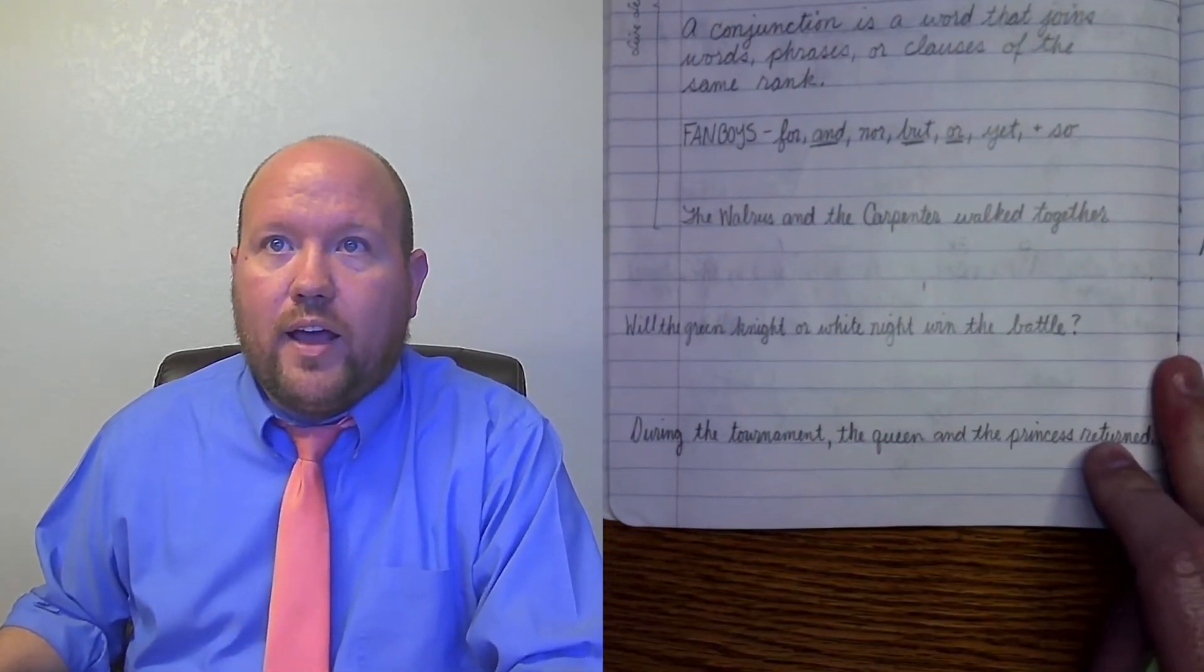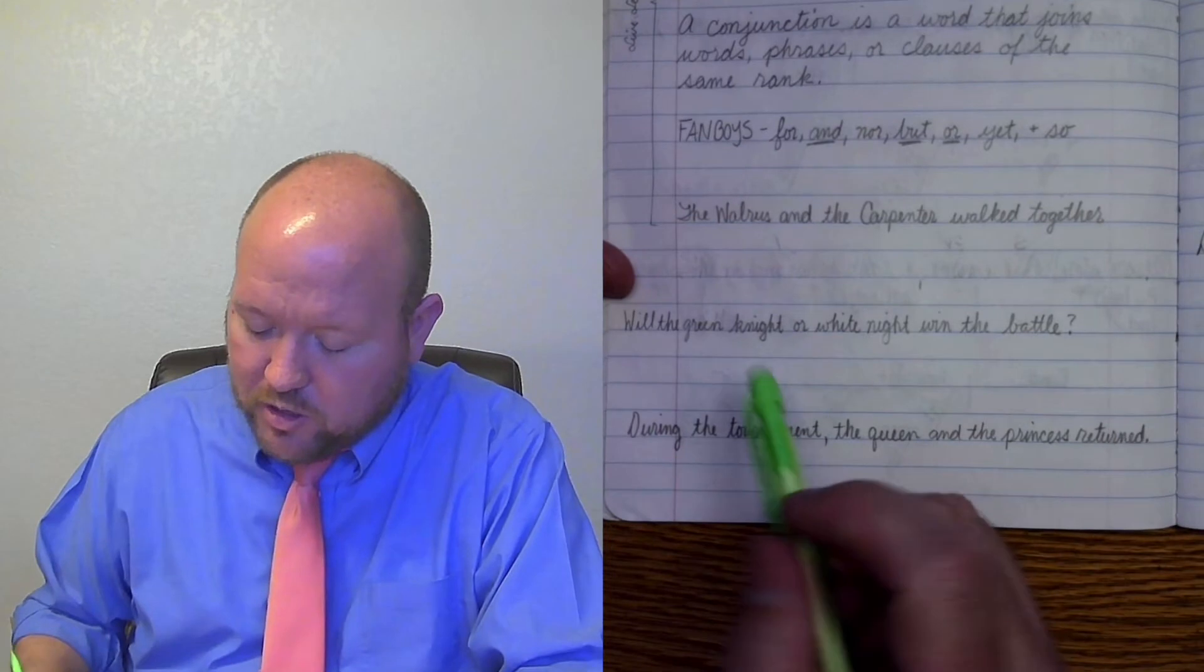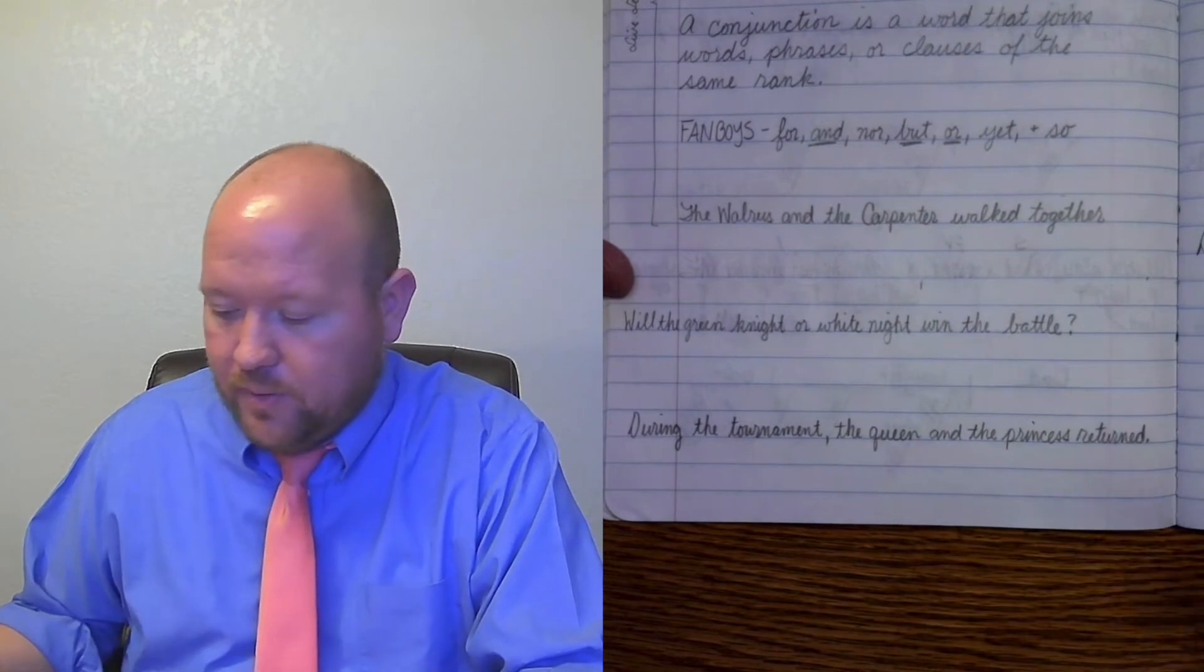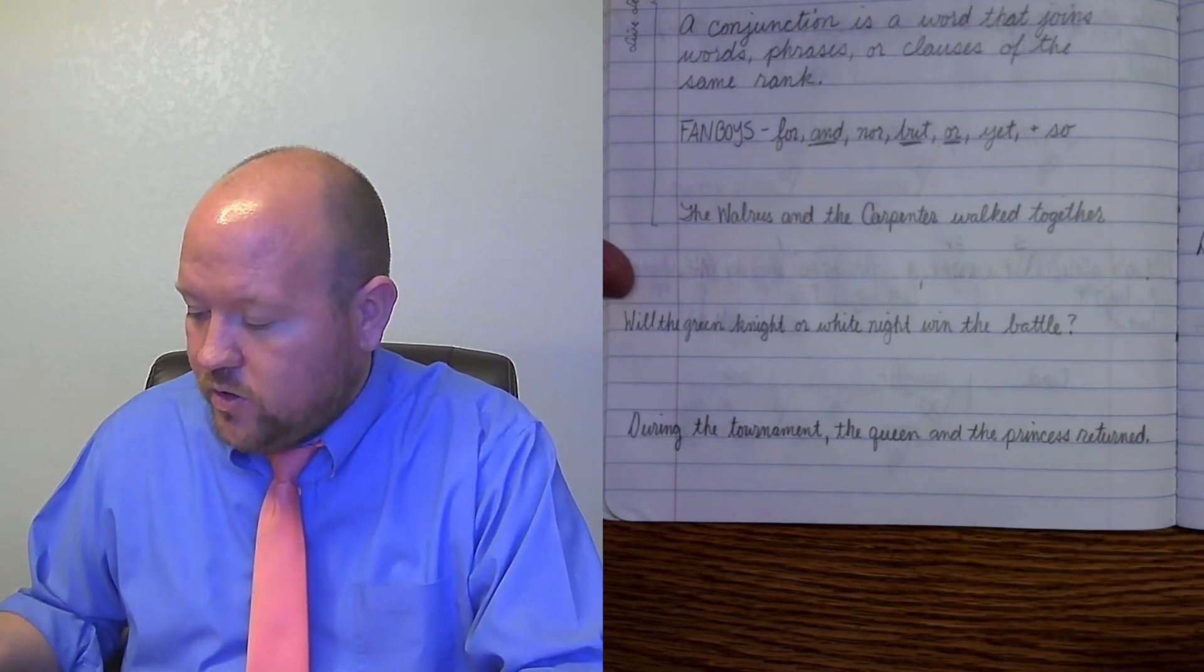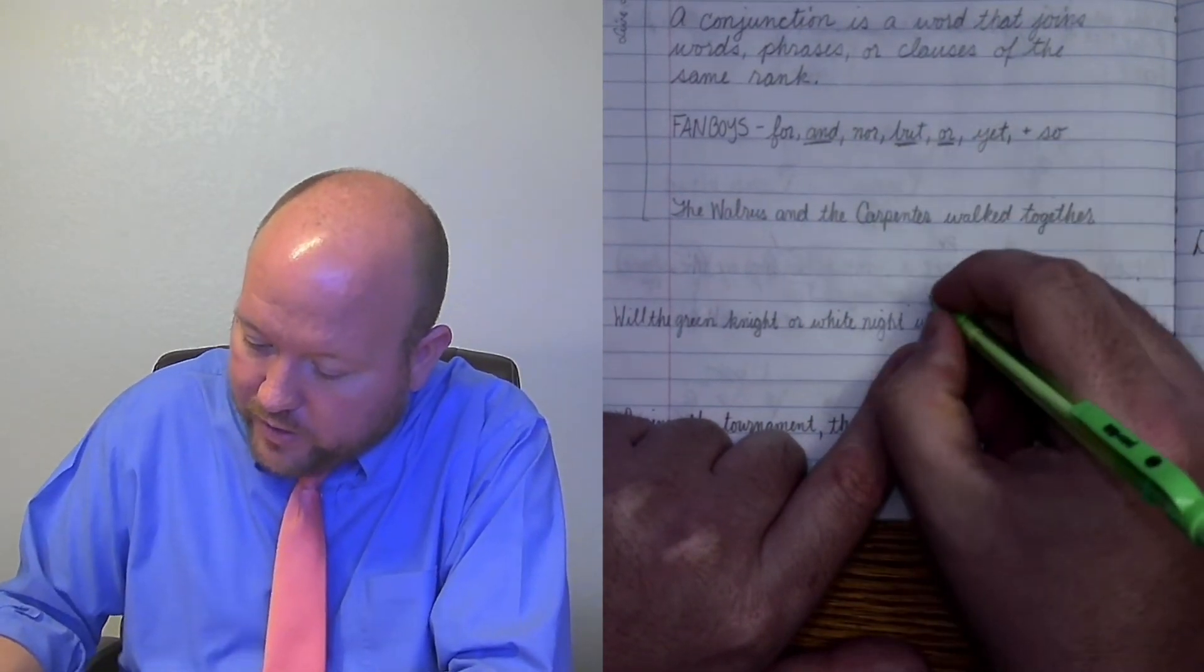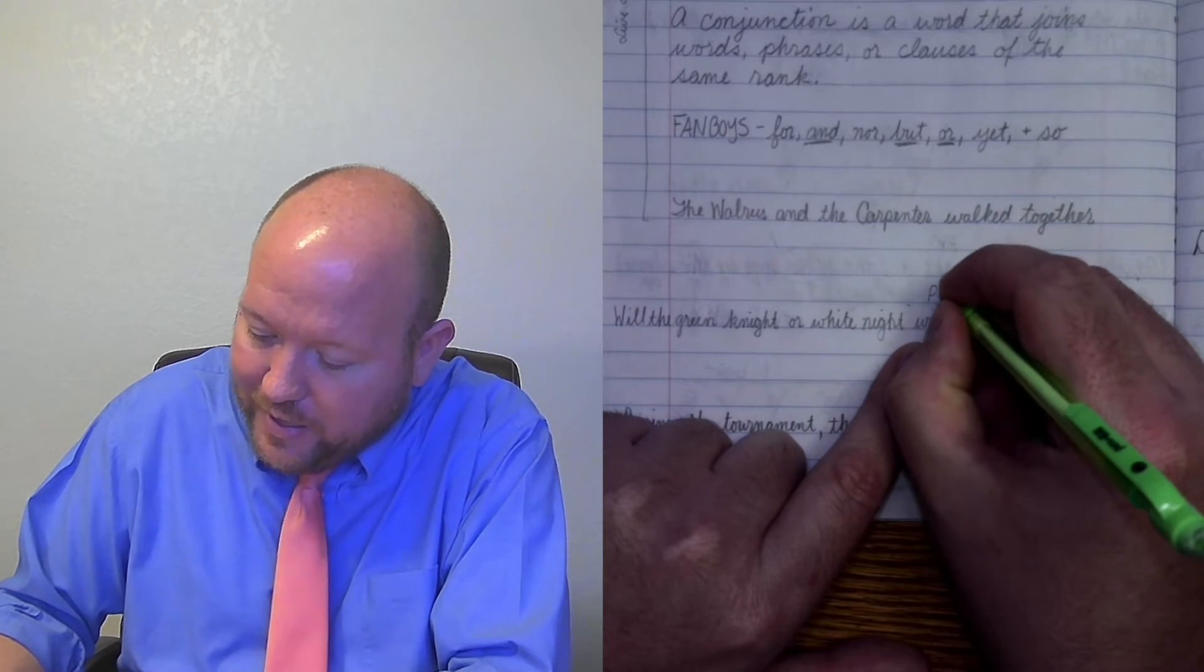So here, we're going to have to deal with what we call a conjunction. So we're going to start off with, will the green knight or white knight win the battle. So here we are. We want to do this just like we normally would, and we're going to start with the word win, because that is our predicate verb. So we don't want to do anything different.